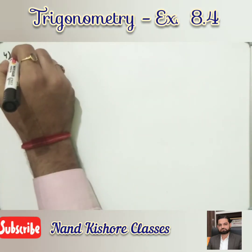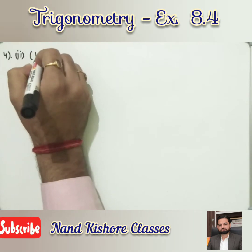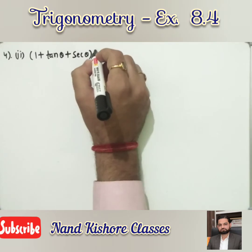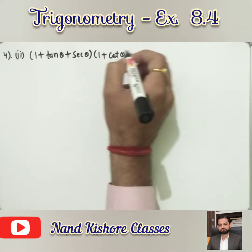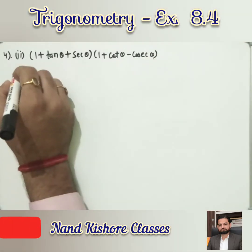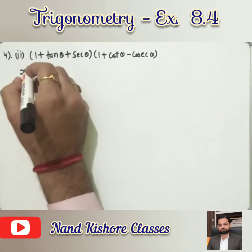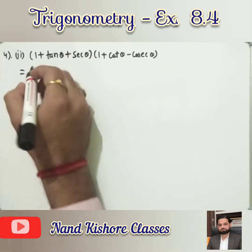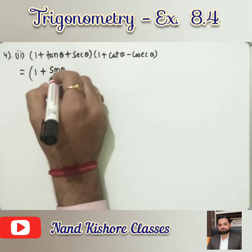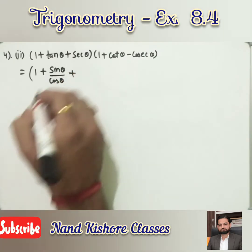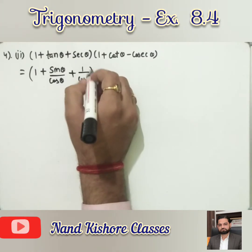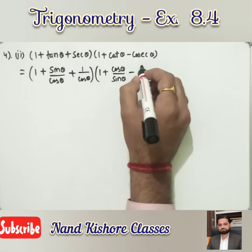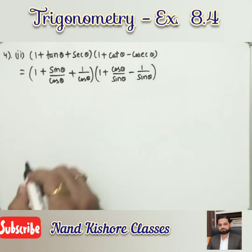Second part: almost all the formulas we have done will be used. The expression is (1 + tanθ)(1 + cotθ)... Keep in mind: when tan, sec, and different kinds of values are there, we will try to convert them into sine and cos. tanθ = sinθ/cosθ, secθ = 1/cosθ, cotθ = cosθ/sinθ, and cosecθ = 1/sinθ. So we convert everything into sine and cos.